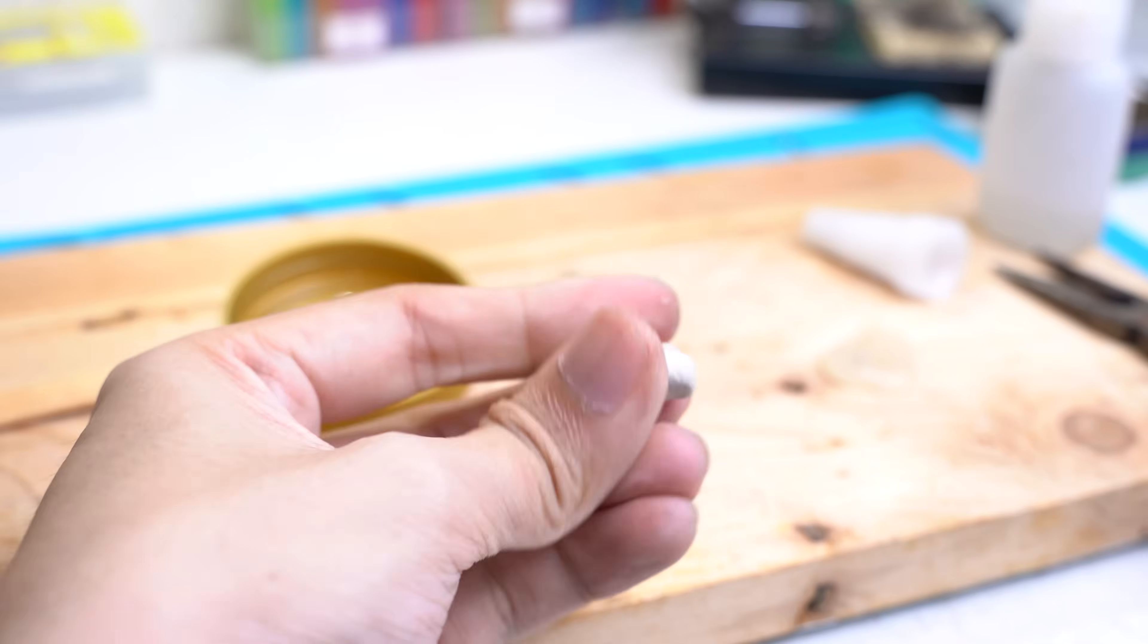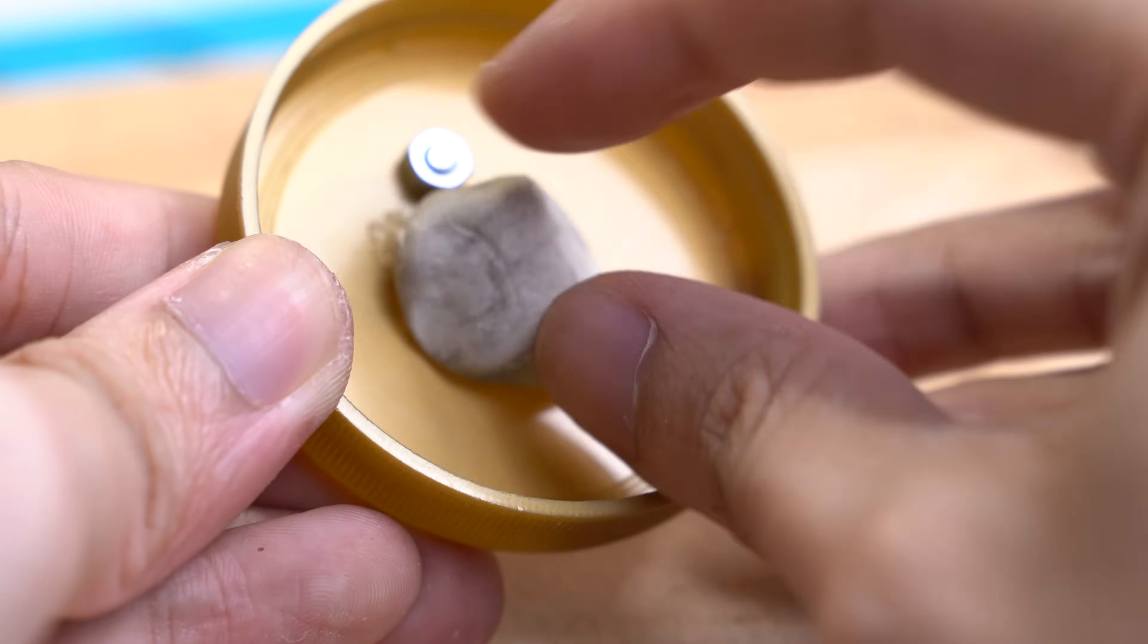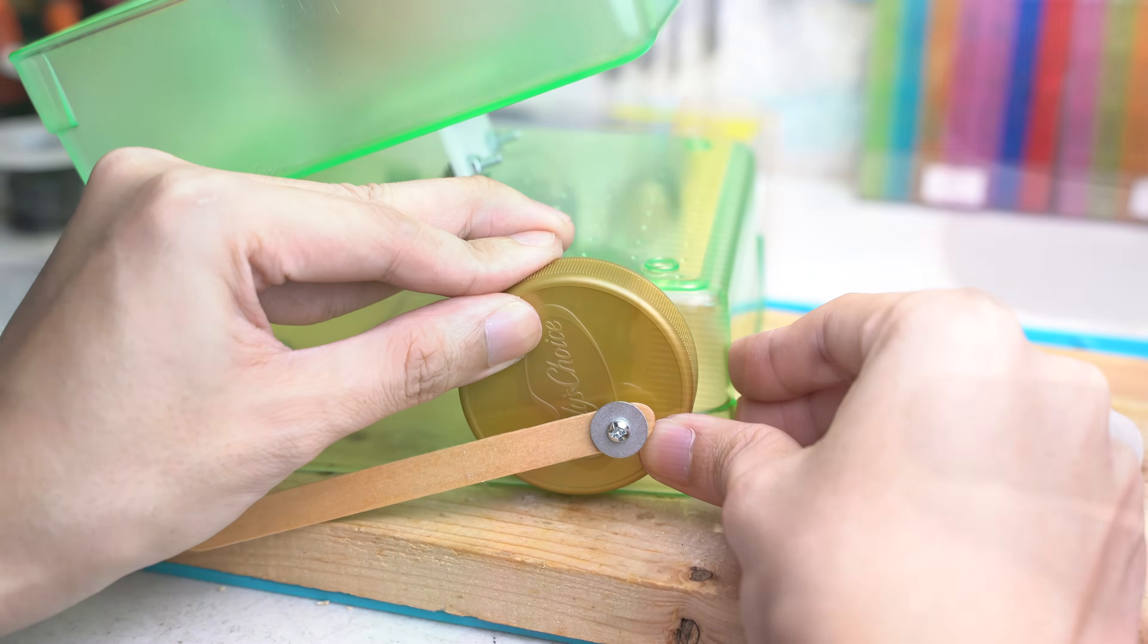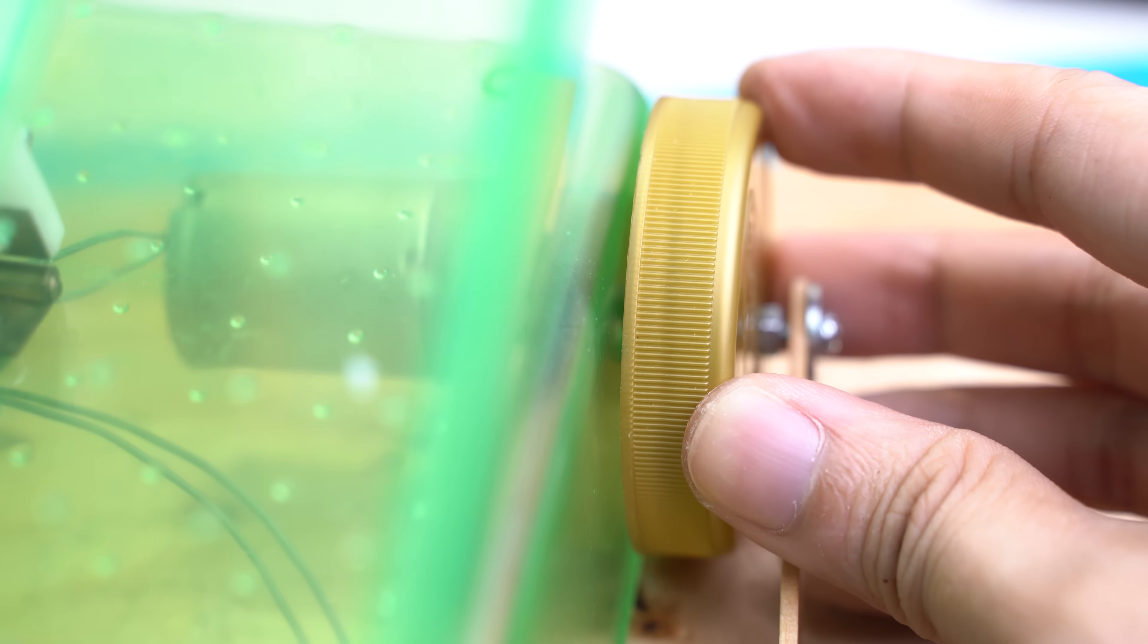If you want to stay away from 3D printed D-shaft mounts, you can use clay epoxy for mounting the flywheel to your gear motor shaft. Just make sure that the flywheel is aligned to the shaft.